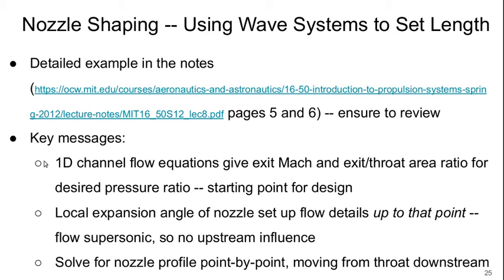But the key takeaway messages from the example are basically that we use the 1D channel flow or the corrected flow equations that we developed last time to give us the exit Mach number and the exit to throat area ratio for our desired nozzle pressure ratio. That's our starting point for the design. And then on the supersonic side, the local expansion angle of the nozzle sets up the flow details up to that point. The flow is supersonic, so there's no upstream influence, which makes it actually really nice for design because it means that I don't have to worry about the influence of what I do downstream affecting everything upstream. The information flow is purely from upstream to downstream.